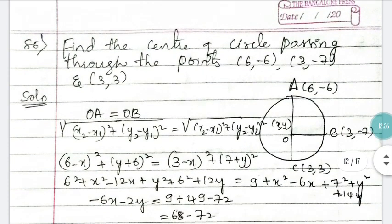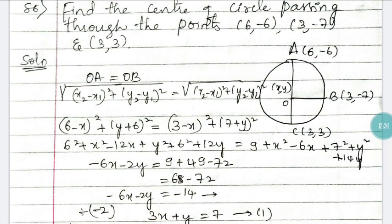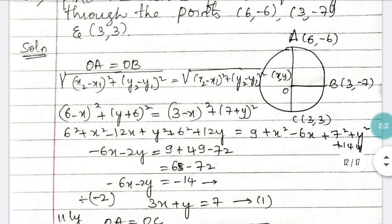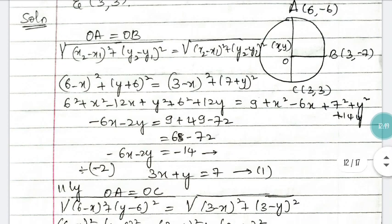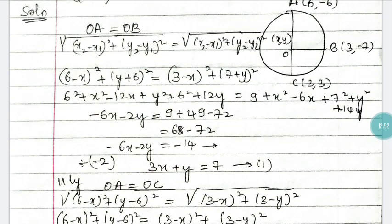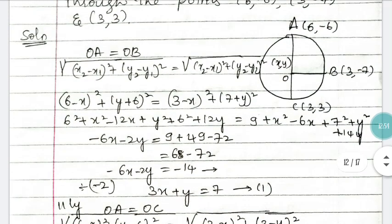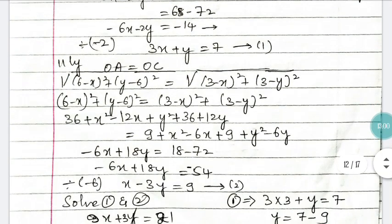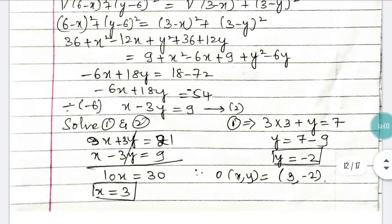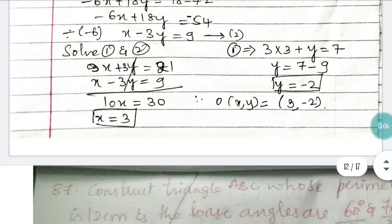Question 86: find the center of the circle passing through three given points. Since all three points lie on the circle, OA = OB and OB = OC. Apply the distance formula — √[(x₂−x₁)² + (y₂−y₁)²] — to form two equations, simplify them, and you get the center as (3, −2).